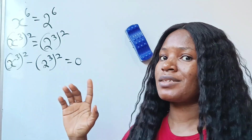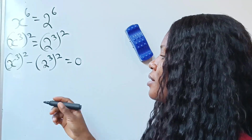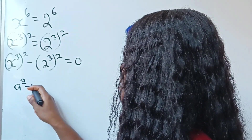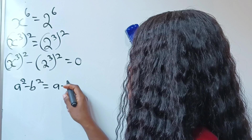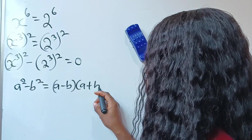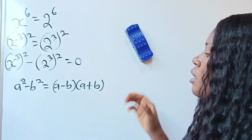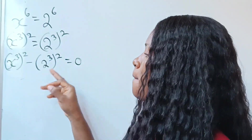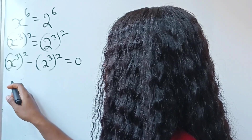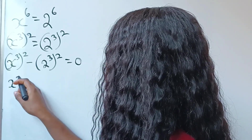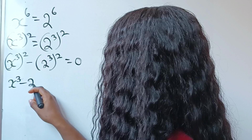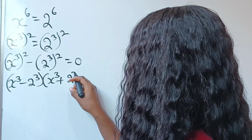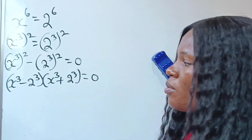Now I'll form the difference of two squares. Recall the algebra identity: a squared minus b squared equals a minus b multiplied by a plus b. In this case, our a is x to the power of 3 and our b is 2 to the power of 3. So we have x to the power of 3 minus 2 to the power of 3, multiplied by x to the power of 3 plus 2 to the power of 3, equals 0.